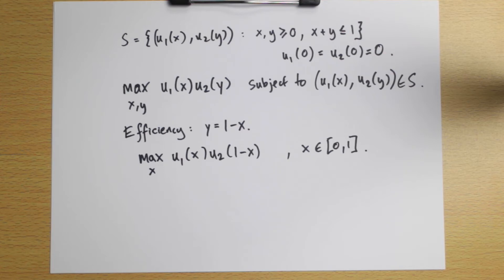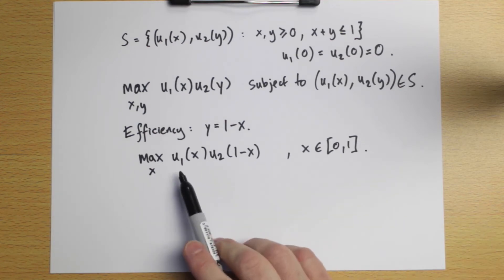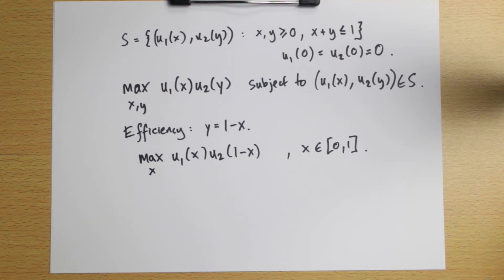So let's talk about risk aversion. How do we capture the idea of one player being more risk averse than another? Well, remember, risk aversion in expected utility theory means your von Neumann-Morgenstern utility function, U1 and U2, are strictly concave. To be more risk averse means your utility function is more concave.